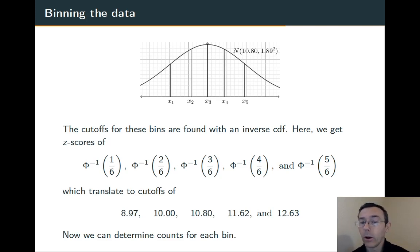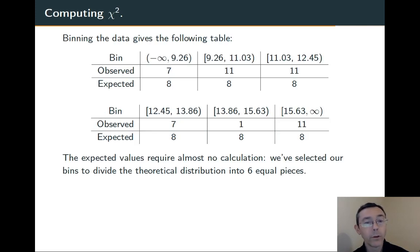Now we go through all our sample data and we see how many values are in each one of these bins. And we get this table. We don't have to do any work at all in computing these expected values. We know that these regions are supposed to be equal probability in this normal distribution. So 48 values in our sample, six bins, so we expect eight to be in each one.